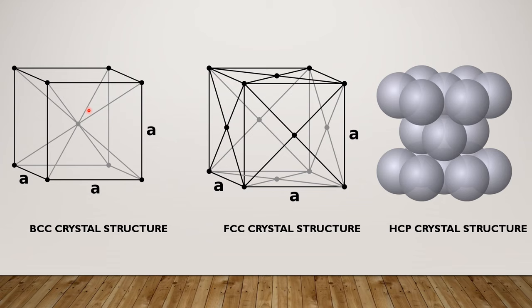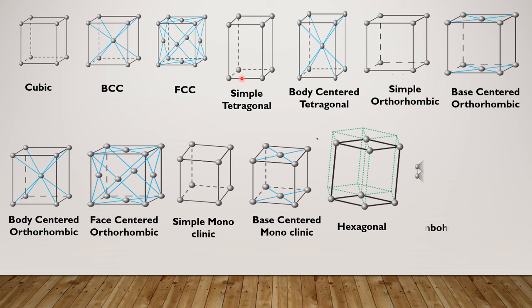Because materials can adopt any of the 14 possible crystalline arrangements, and these are unique three-dimensional arrangements of lattice points, which is known as the Bravais lattices.